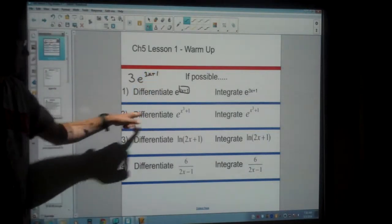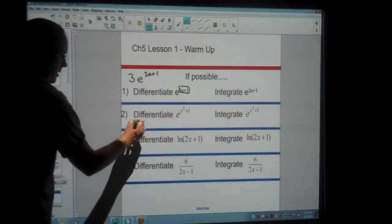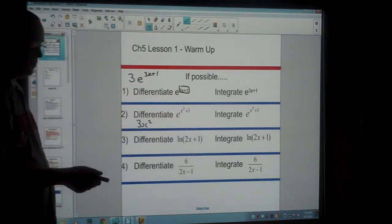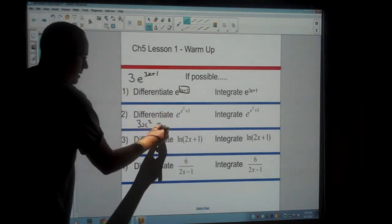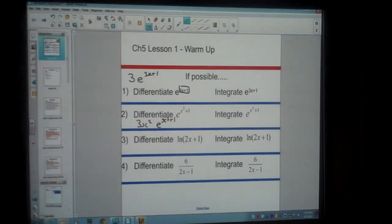Now we can use that same idea for question 2 as well. So the differential of x cubed plus 1, the differential of x cubed is 3x squared. The differential of 1 is 0. And then we can write down our answer afterwards. So e to the x cubed plus 1, which is what we started with to begin with.